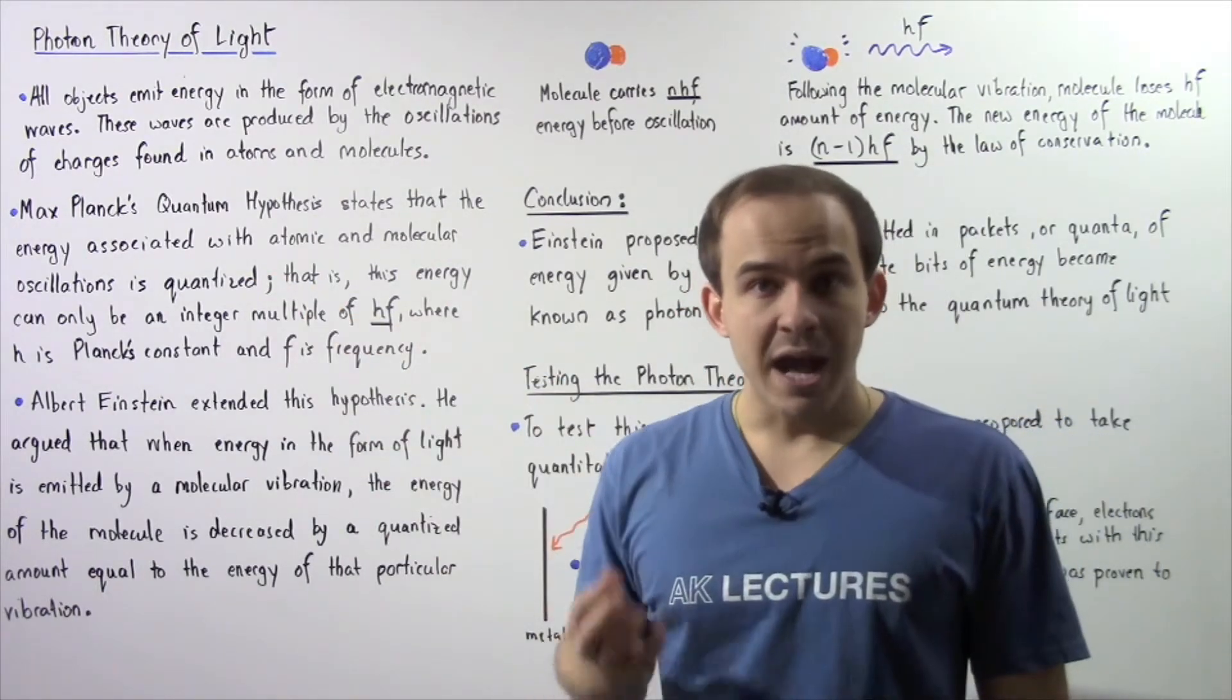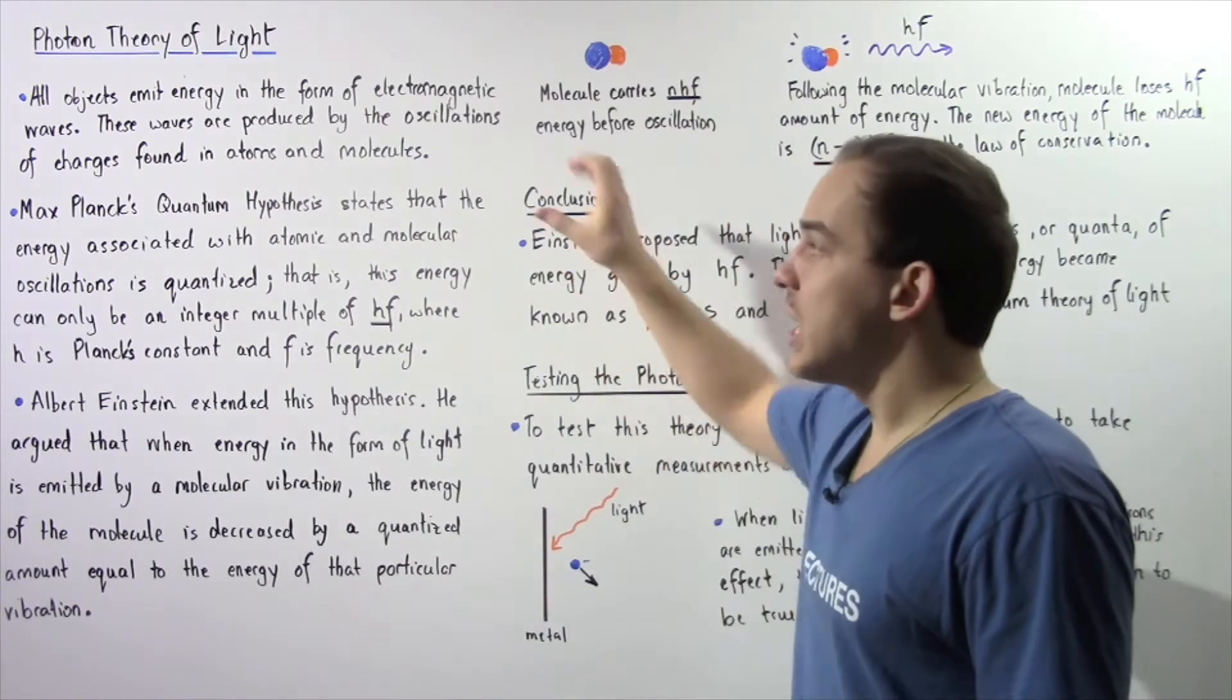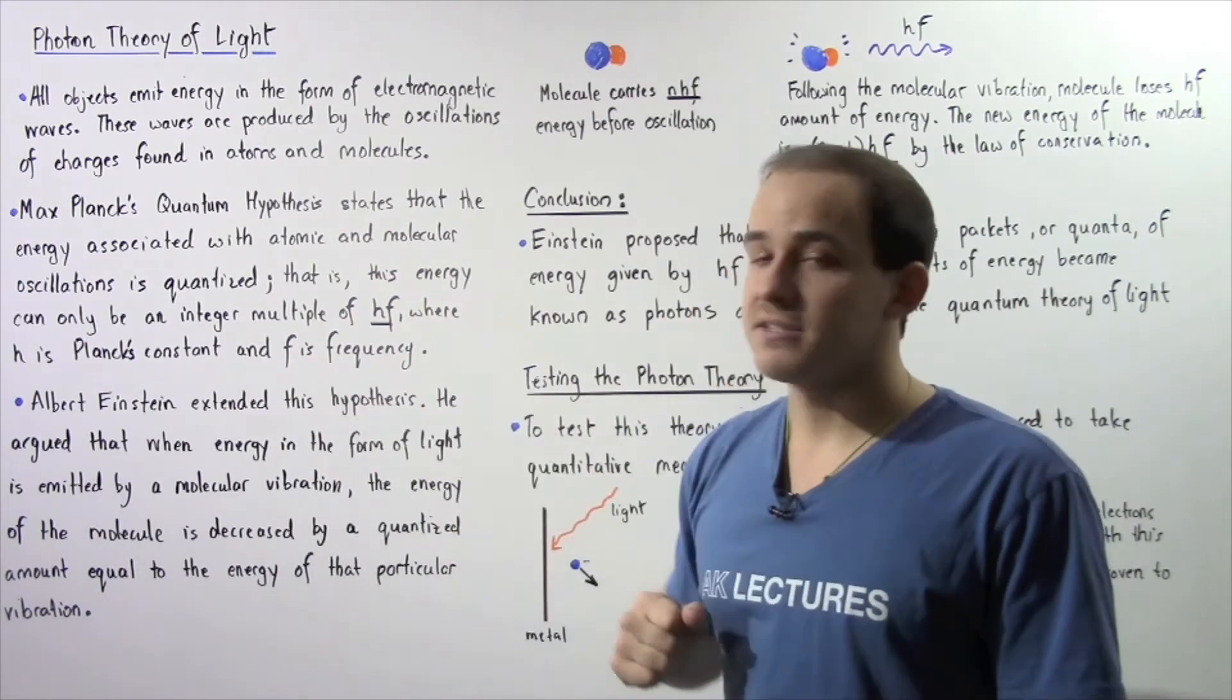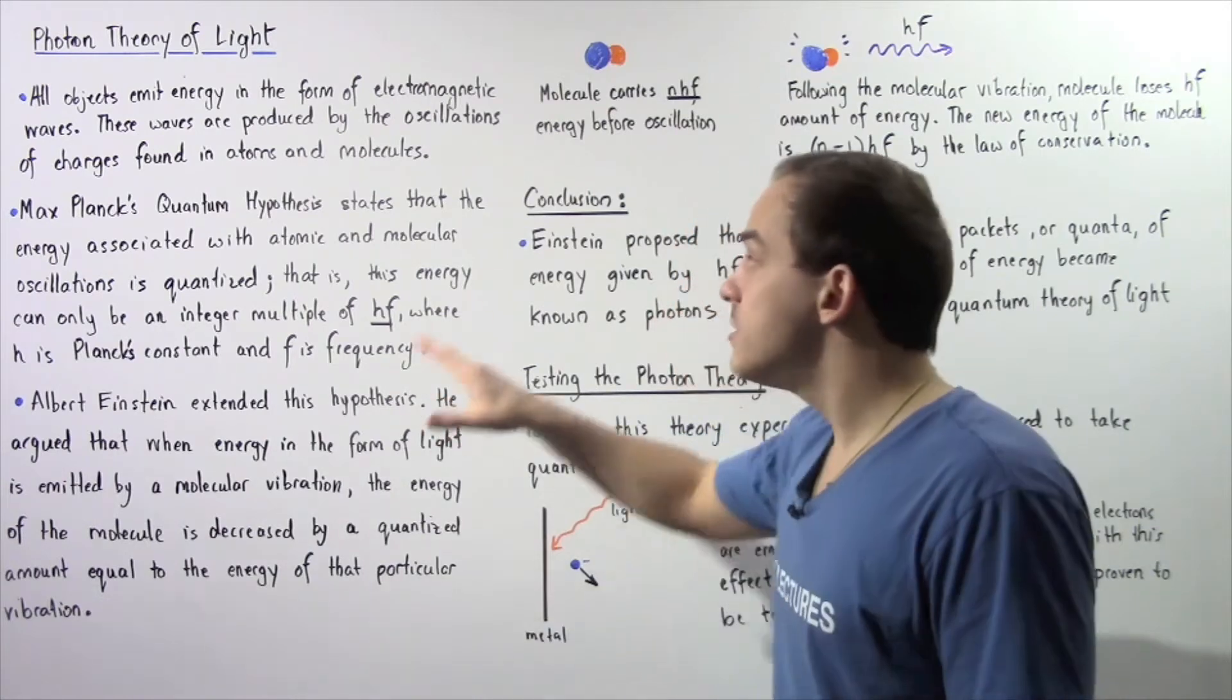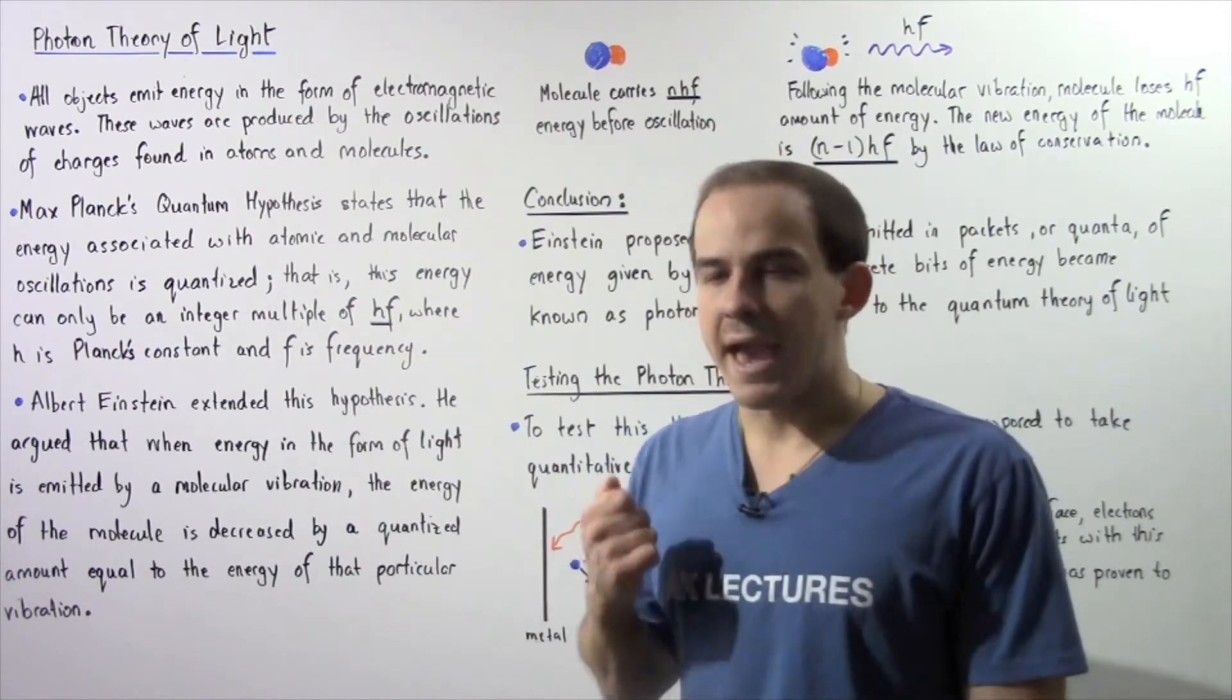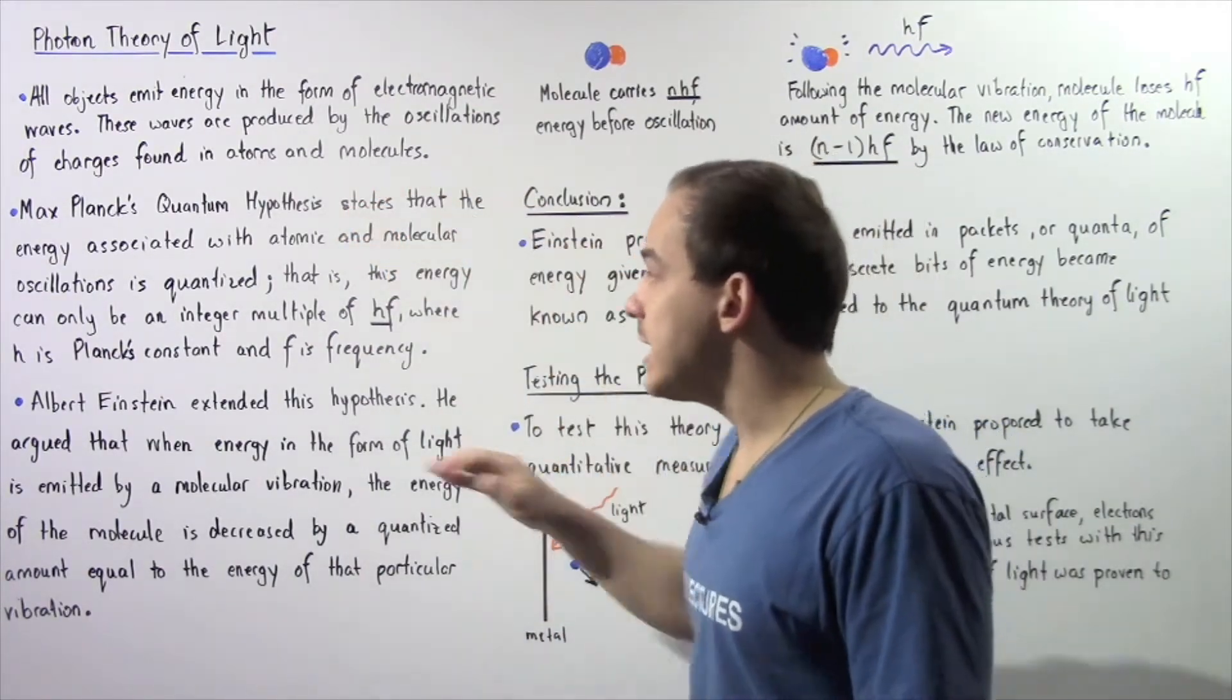Max Planck's quantum hypothesis, which we spoke about in the previous lecture, states that the energy associated with atomic and molecular oscillations is quantized, that is, this energy can only exist as an integer multiple of the minimum energy given by h times f.